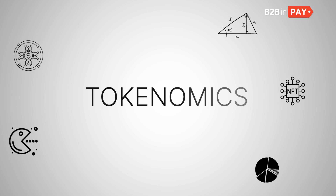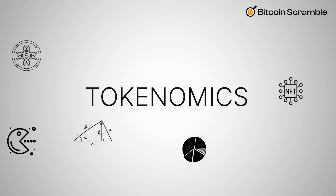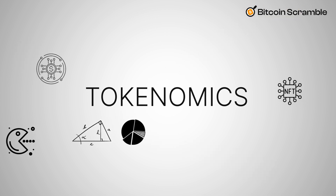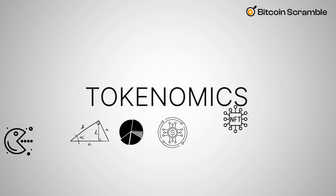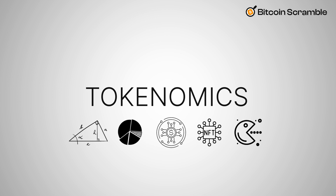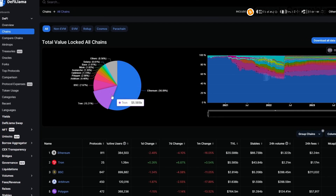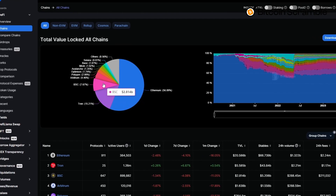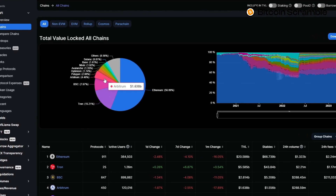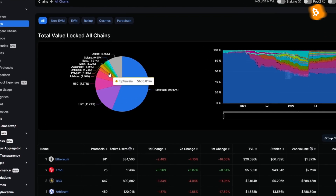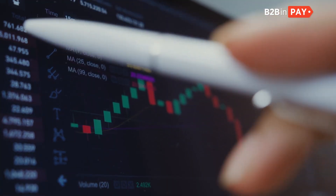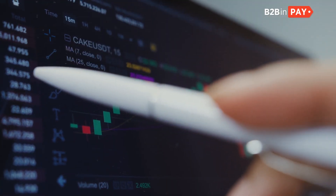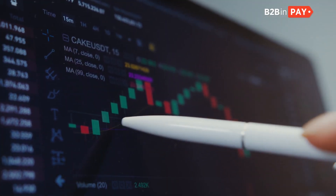Tokenomics can be called an experimental and new field at the intersection of mathematics, statistics, economics, cryptography, IT, game design, and other related disciplines, which allows studying in detail the economic indicators of liquidity, supply, and other parameters of a single crypto project to make a balanced decision for further investment in it.